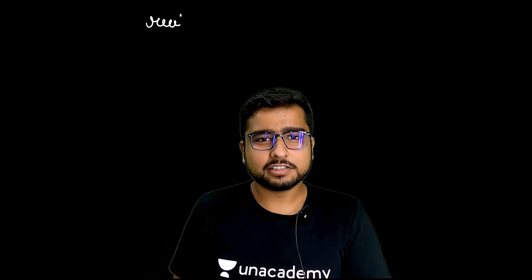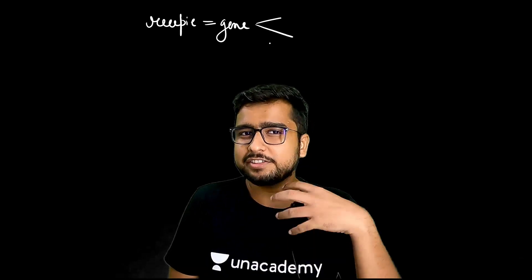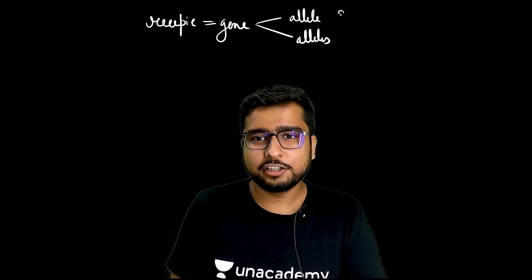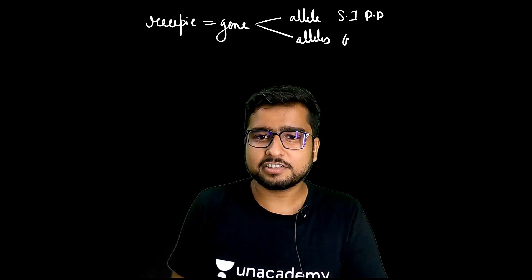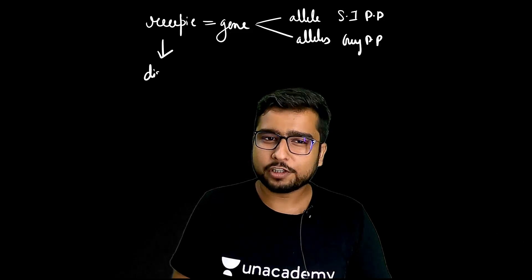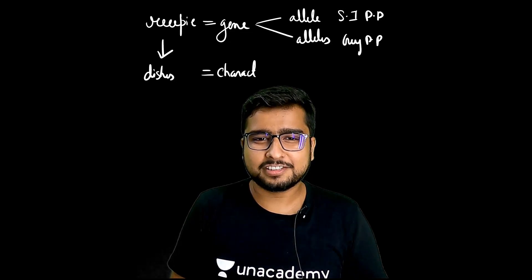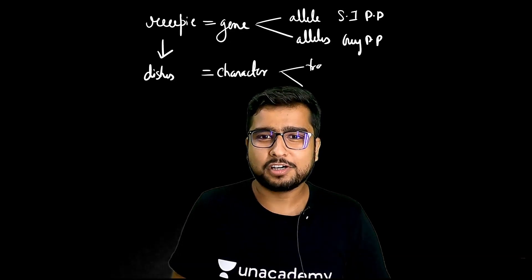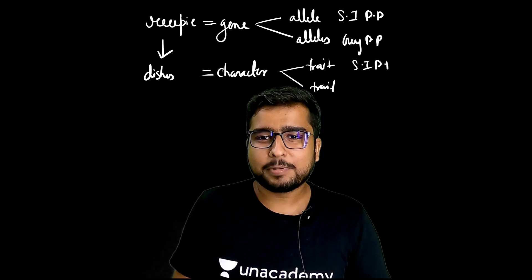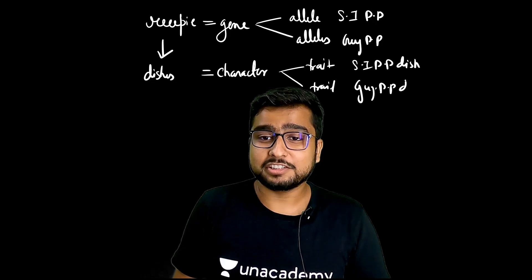So to summarize: one recipe equals a gene, and alternative recipes are alleles. South Indian Palak Paneer and Gujarati Palak Paneer are alleles. Recipes code for dishes — and this dish is your character. The alternative form of a character you will call a trait. South Indian Palak Paneer dish and Gujarati Palak Paneer dish — these are traits. And because you have two sets of information, genes are loaded on chromosomes, just as recipes are loaded in recipe books.